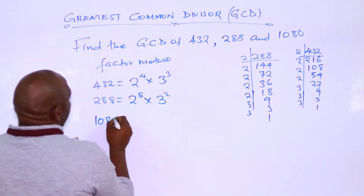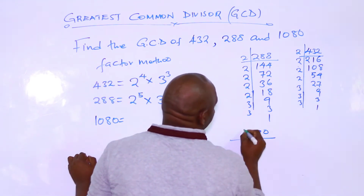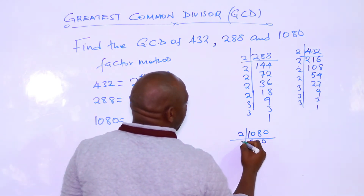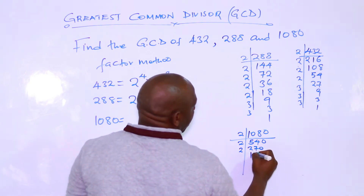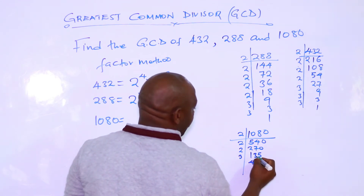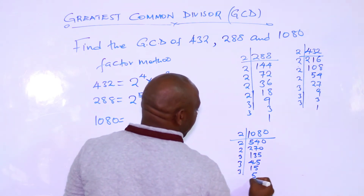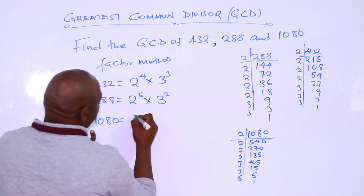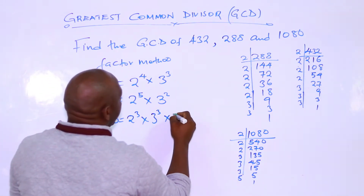Then factors of 1080: by 2: 540, by 2: 270, by 2: 135, by 3: 45, by 3: 15, by 3: 5, by 5: 1. So 1080 is 2 to the power 3 times 3 to the power 3 times 5.